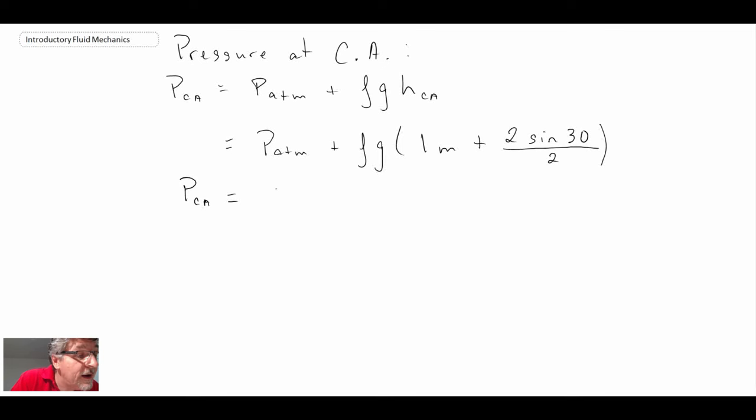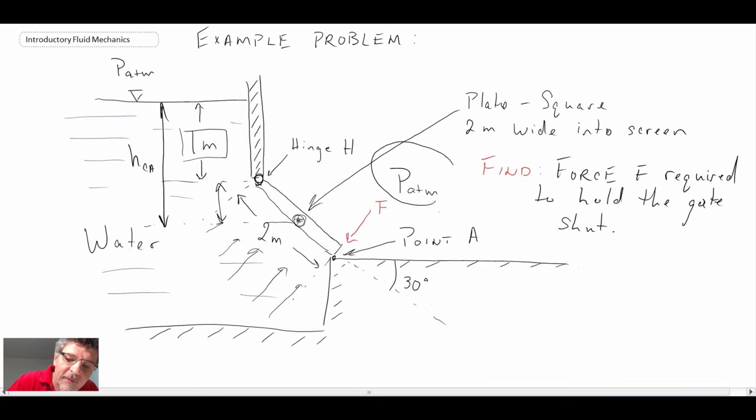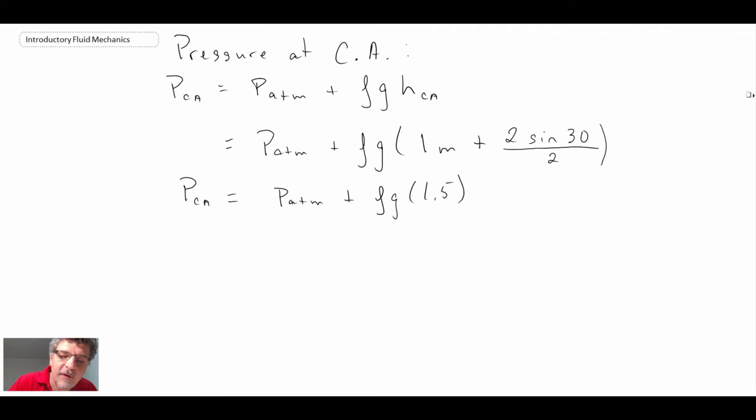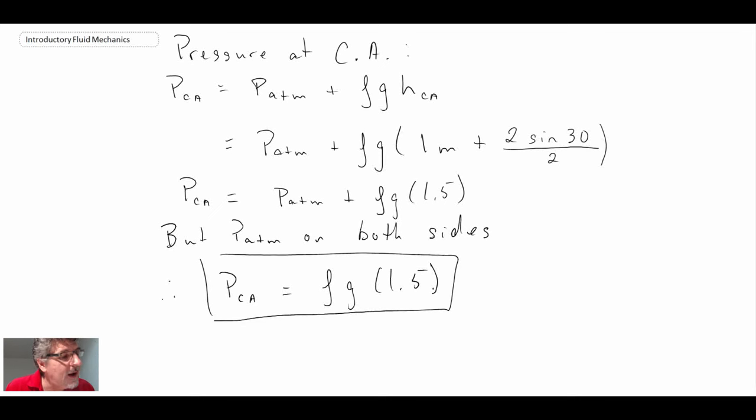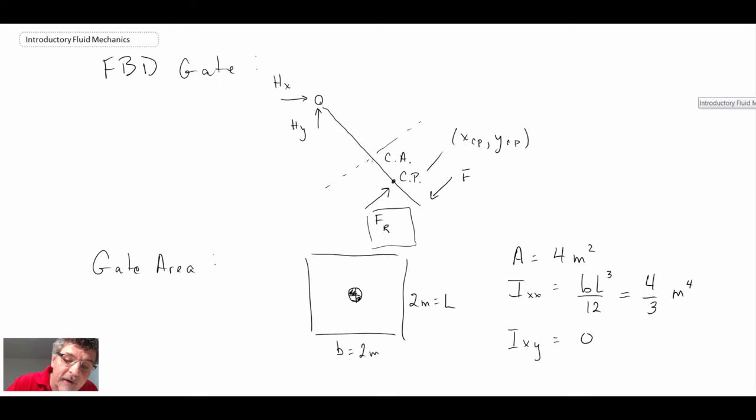We get PCA. So the pressure at the center of area is pressure atmosphere plus rho G times 1.5. Now, the thing that we said was that P atmosphere is on the outside of the plate. So the P atmosphere is just going to drop out. And with that, what we're ending with for the pressure at the center of area is rho G times 1.5. Now, that pressure, we now need to figure out the force or the location of the force. And that force is going to be acting not at the center of area, but at the center of pressure.